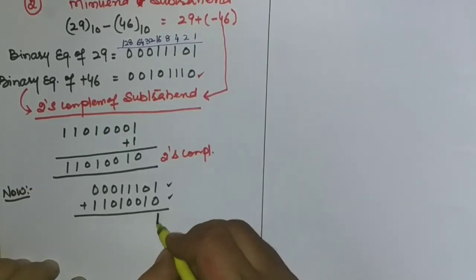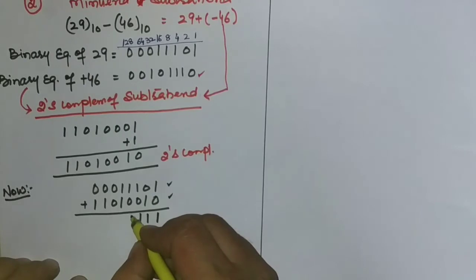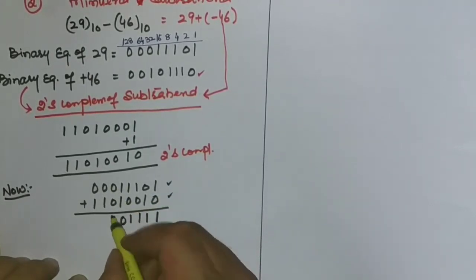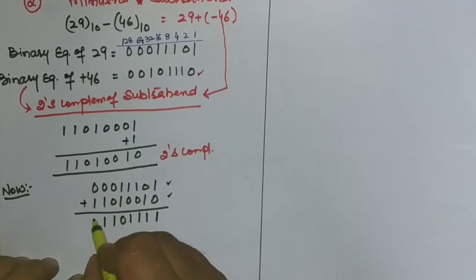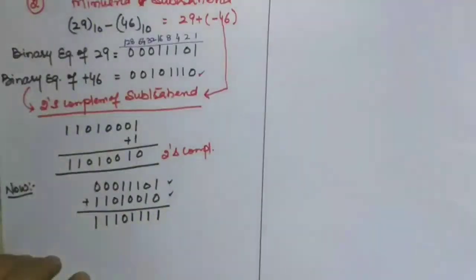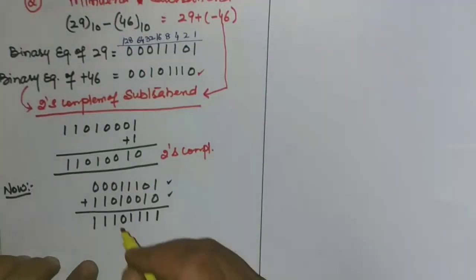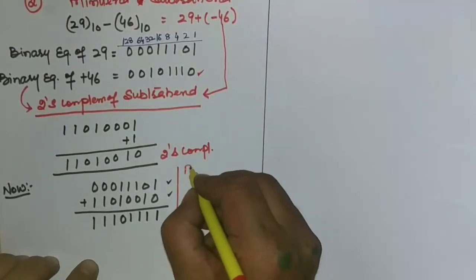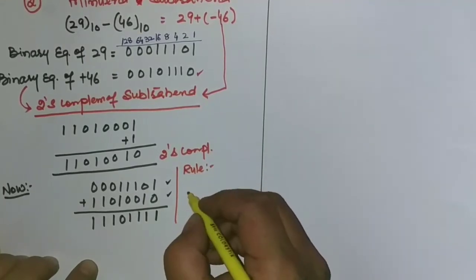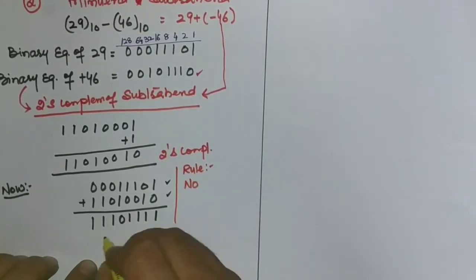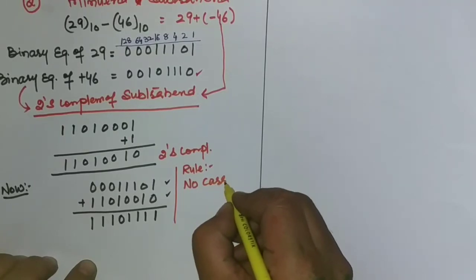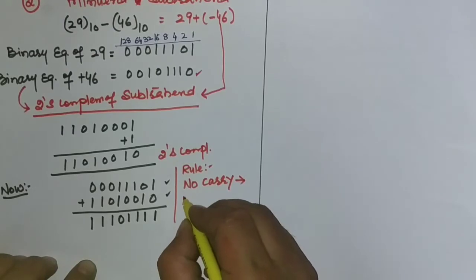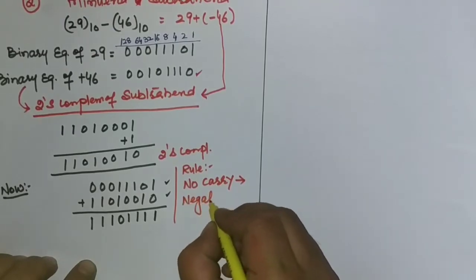We get the one's complement of 46 and then add one to get the two's complement. Now we add 29 and the two's complement of 46. Working through the addition we get a result. Looking at the outcome, we see that there is no carry out from the most significant bit.